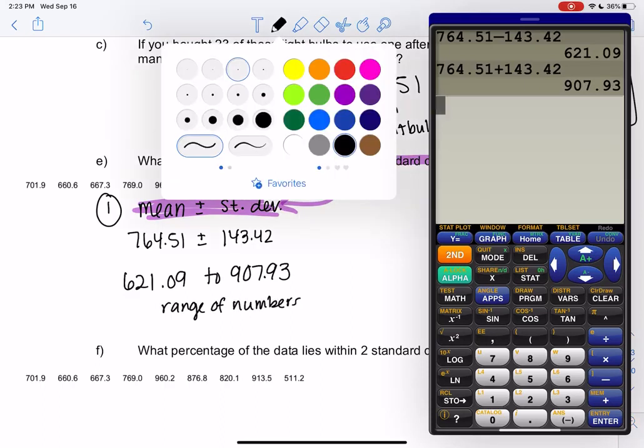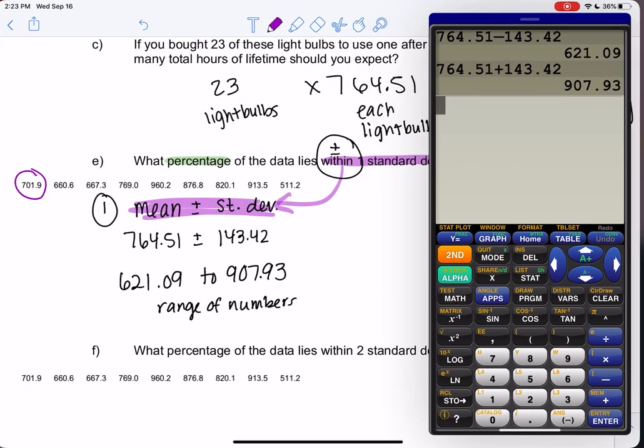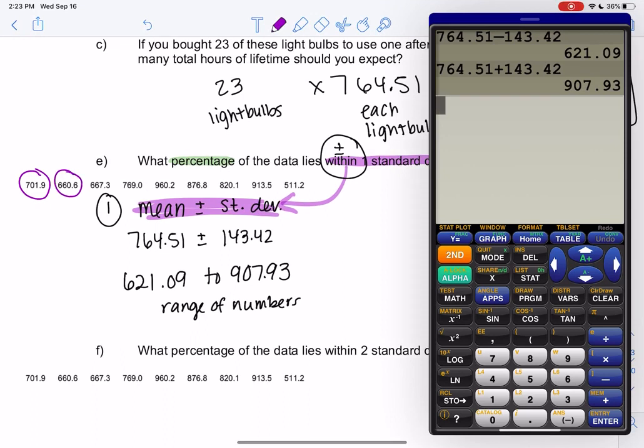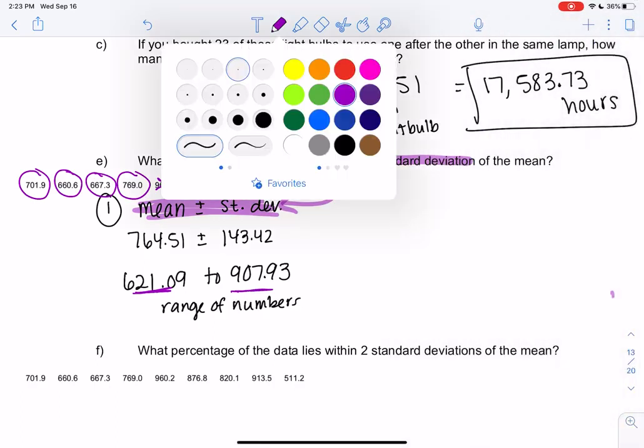So what I'm going to do is go through the list of data and figure out how many of the data values are within this range. So 701 would be in between that range, 660 is in that range, 667 is in between these two numbers, 769, 960 would be outside, 876 makes it, 820 makes it, 913 and 511 are not inside the range.